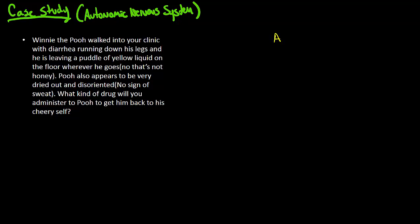So, let's just lay it out there. Which autonomic nervous system branch is taking over here? Let's look at the signs and symptoms. So, he has diarrhea. He's leaving a puddle of yellow liquid on the floor. That's probably urine. Some more GI issues here.